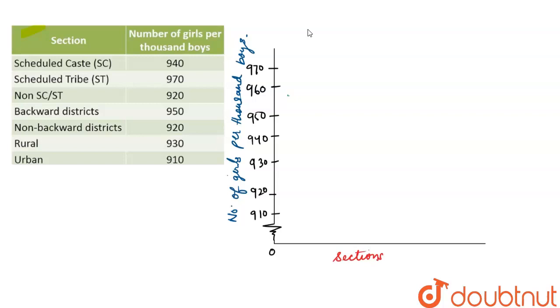And here we will write the sections because we are going to make the bar graph for the sections. So here first make the bar graph for SC. For SC we have 940, so it will be like this. This is for SC, I'm writing it down here.